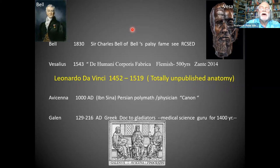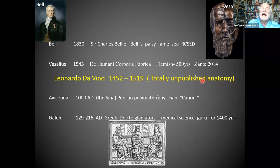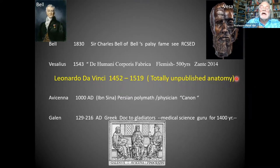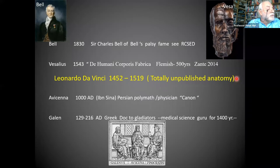Look at these dates and see where Leonardo da Vinci sits: he is 30 years — a whole generation — before the first decent published textbook that went, if you like, viral. Now you may say, why don't we know much about Leonardo's anatomy? Please note this is the most important thing you may learn as a young medical scientist: he never published his work. No one really knew about it until the 19th century. Had it been published, medical science would have moved on incredibly quickly.